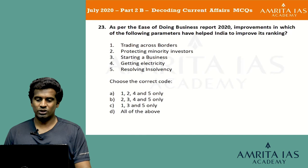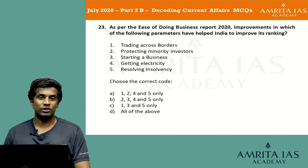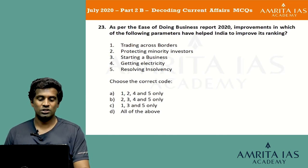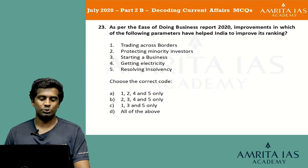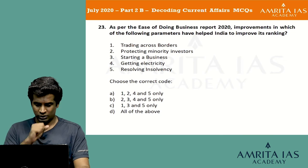As per the ease of doing business report of 2020, improvements in which of the following parameters helped India improve its ranking: 1) Trading across borders, 2) Protecting minority investors, 3) Starting a business, 4) Getting electricity, 5) Resolving insolvency. Choose the correct code: option A 1, 2, 4 and 5 only; option B 2, 3, 4 and 5 only; option C 1, 3 and 5 only; option D all of the above.